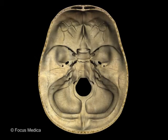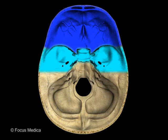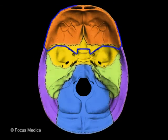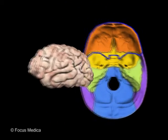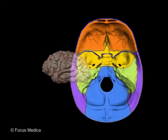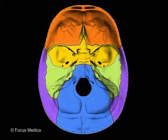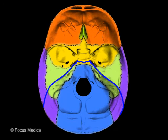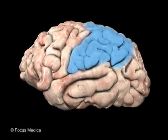The floor of the cranium is demarcated into anterior, middle, and posterior fossae. The anterior fossa is closely related to the frontal lobe. The middle fossa lodges the pituitary gland, temporal lobe, and parietal lobe. The posterior fossa lodges the parietal and occipital lobes.